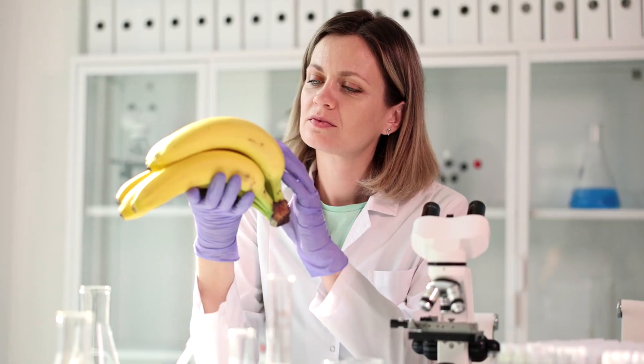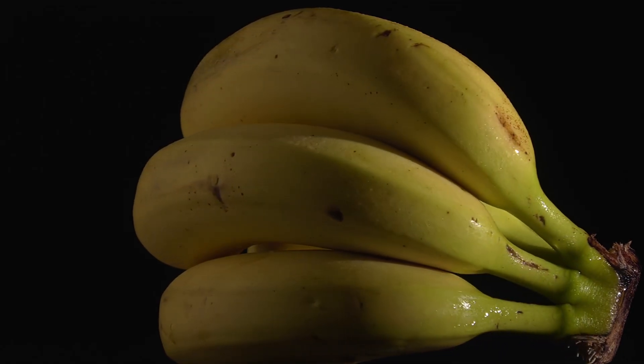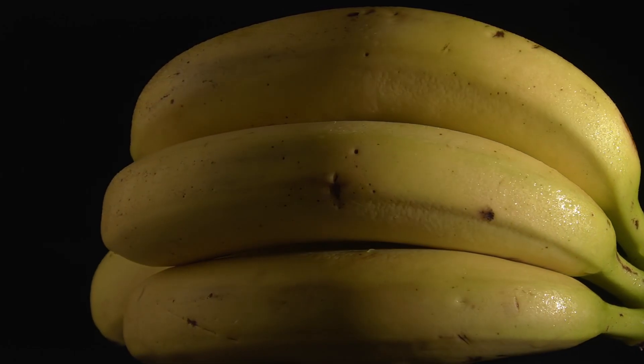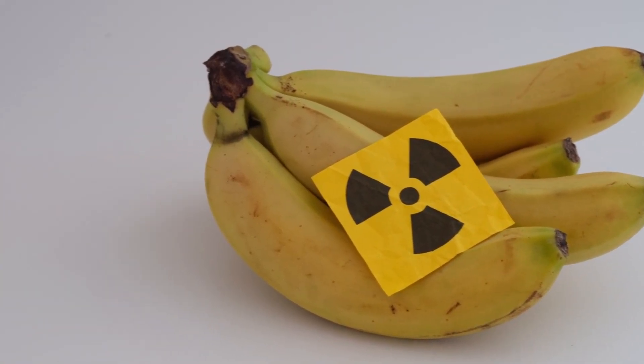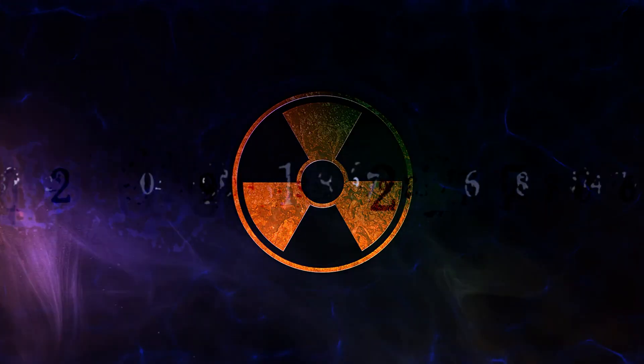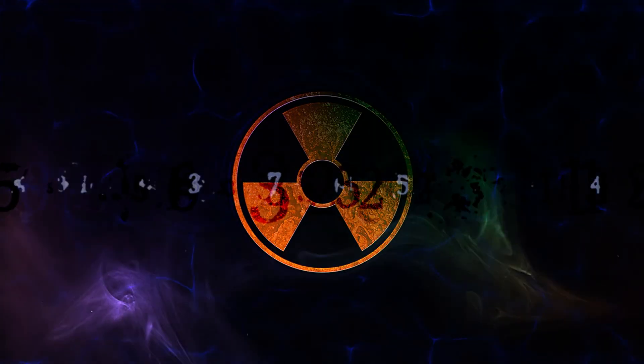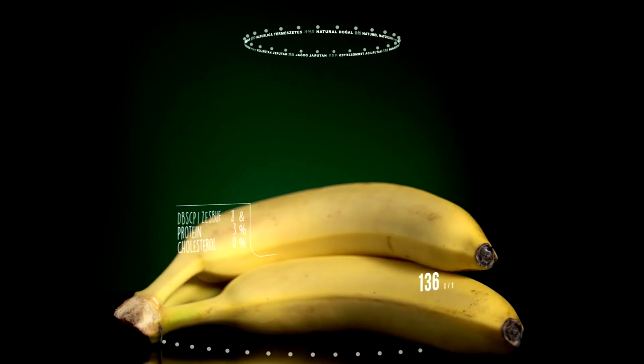Let's start with this: bananas are radioactive. Yeah, the fruit sitting on your kitchen counter has measurable levels of radiation thanks to its potassium-40 content. Eat enough of them, about 10 million in one sitting, and technically you'd die from radiation poisoning. But here's the real kicker: the United States government even has a unit called the banana equivalent dose to explain how much radiation exposure something has. That's right, our entire radiation scale is being compared to bananas.